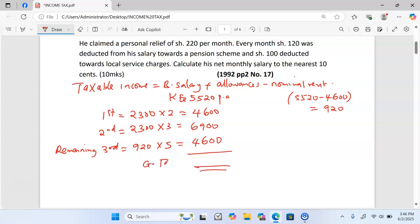When you sum up all these totals, you get the gross tax in Kenya shillings per annum. 4,600 plus 6,900 plus 4,600 equals 16,100 per annum.